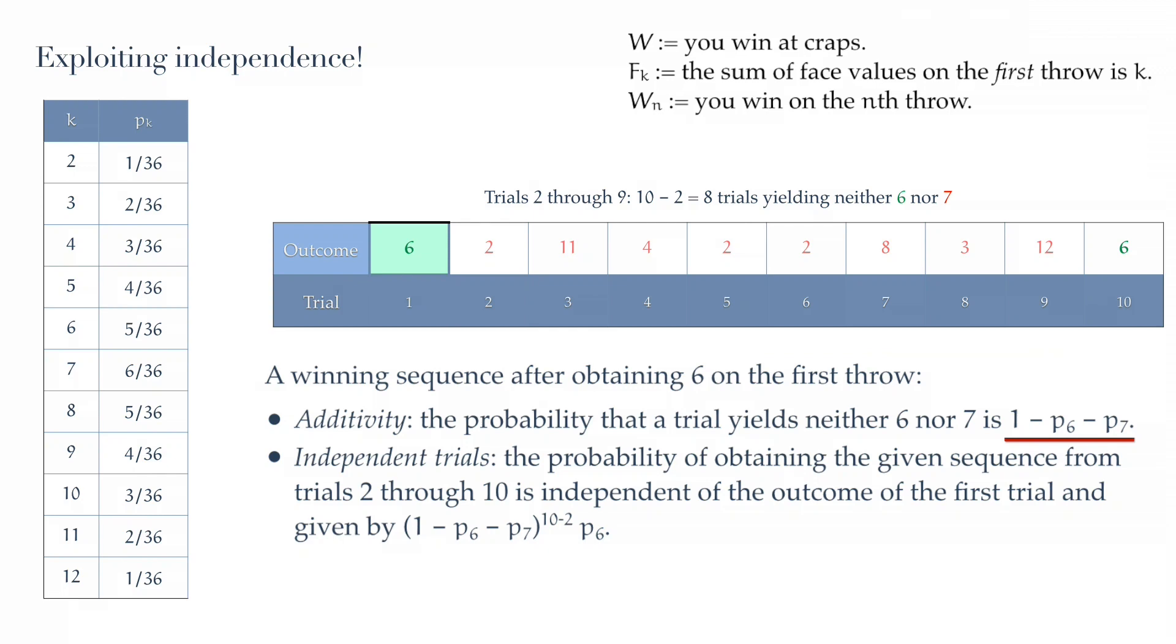In other words, the probability of any of those intervening numbers, 2, 11, 4, 2, and so on, is 1 minus P6 minus P7. We can recall that we know P6 and P7 from the table on the left. Very well. This is for one intervening trial.